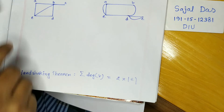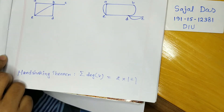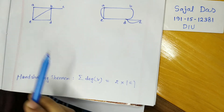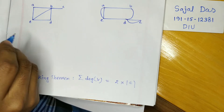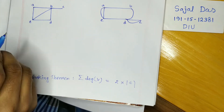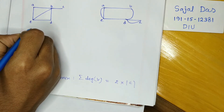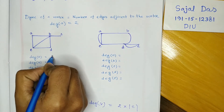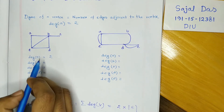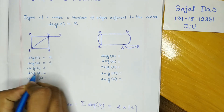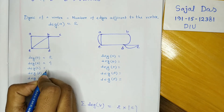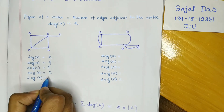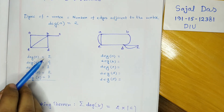Now let's look at a few new graphs. This graph has five vertices: a, b, c, d, and e, and it is an undirected graph. Finding all vertex degrees: degree of a is 2, degree of b is 4, degree of c is 1, and degree of d is 2.